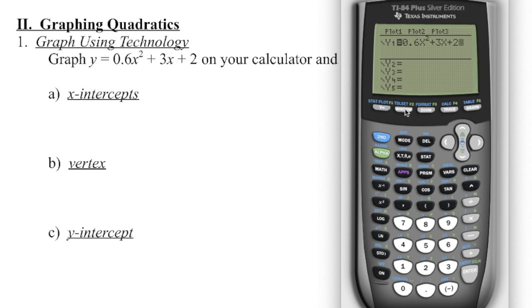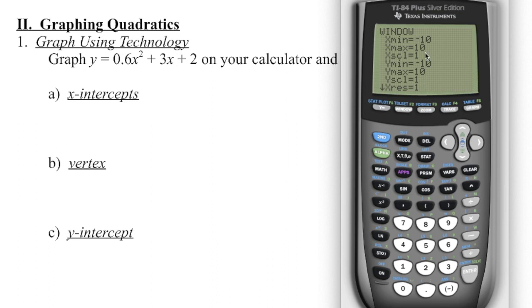If you take a look at the window, this is the default. So we're going to go on the x-axis from negative 10 to positive 10 with a scale of 1, so every one unit there's going to be a tick mark. On the y-axis we're going to go from negative 10 to positive 10 with a scale of 1. We're going to go over to graph now and we can see there is that parabola.